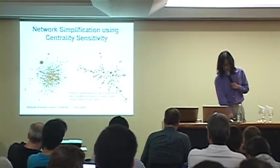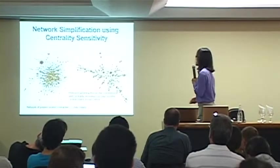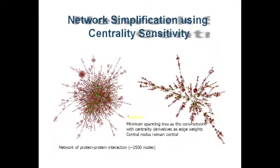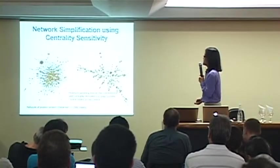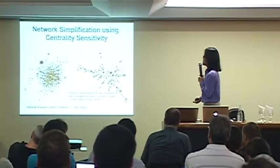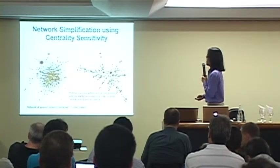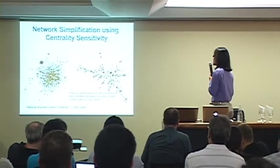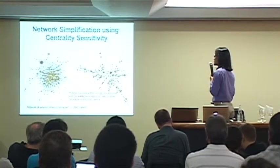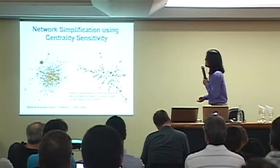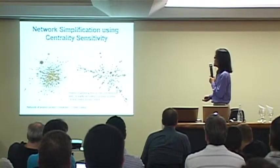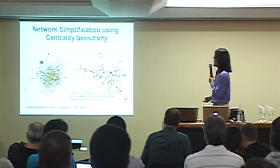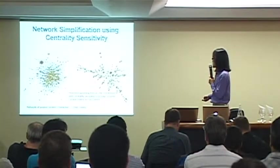We can use centrality sensitivity to filter the network to give a better overview of the networks. So, like here, we have this protein interaction network, which is not big, it's only 1,500 nodes. But then when you lay it out directly using the conventional layout method, this is what you get. And then we compute the centrality, so the green color represents high centrality. So, by using centrality sensitivity, we compute the minimum spanning tree as the core network.